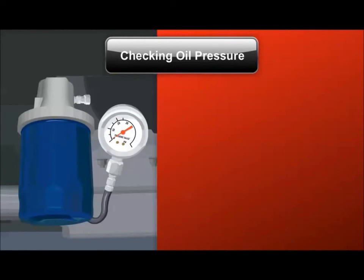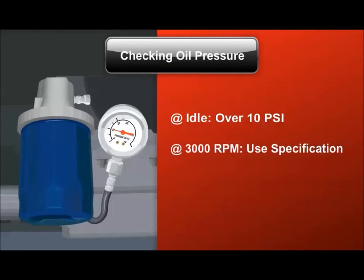To confirm oil pressure faults, check actual pressure using a mechanical oil pressure gauge. Oil pressure should be at least 10 psi at idle and match the service manual specifications at 3000 rpm.